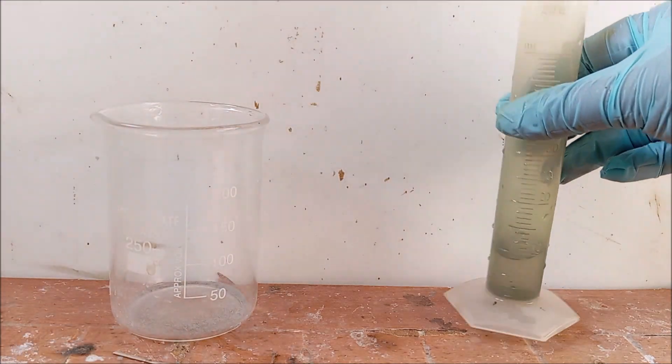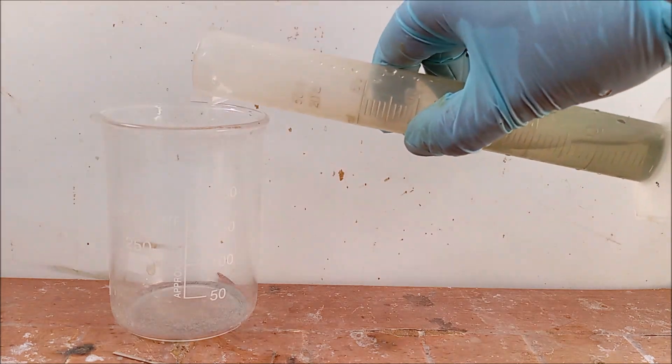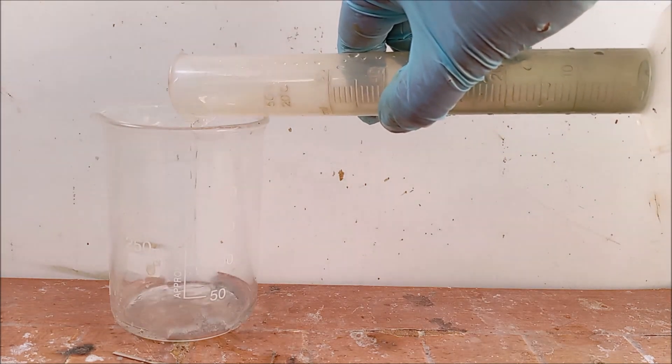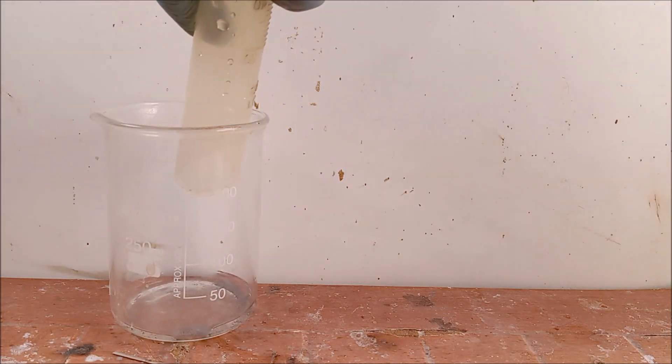Take 0.6 gram of nickel metal in a beaker. Add 10 milliliters of 1 molar sulfuric acid to it. A little excess of acid can be added later if required.